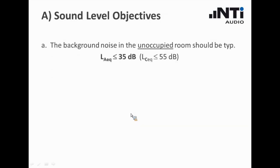What is the absolute target? What should you strive for? Well, the standards say that typically the background noise in the unoccupied room, without pupils, without teacher being present, should be below 35 dB A-weighted or 55 dB C-weighted.